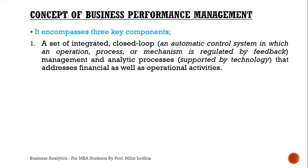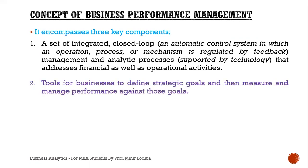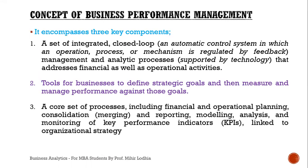It encompasses three key components. First, a set of integrated close-loop management and analytic processes — close-loop meaning an automatic control system regulated by feedback — which is supported by technology that addresses financial as well as operational activity. Second, tools for businesses to define strategic goals and then measure and manage performance against those goals. Third, a core set of processes including financial and operational planning, consolidation, reporting, modeling, analysis, and monitoring of key performance indicators which link to organizational strategy.